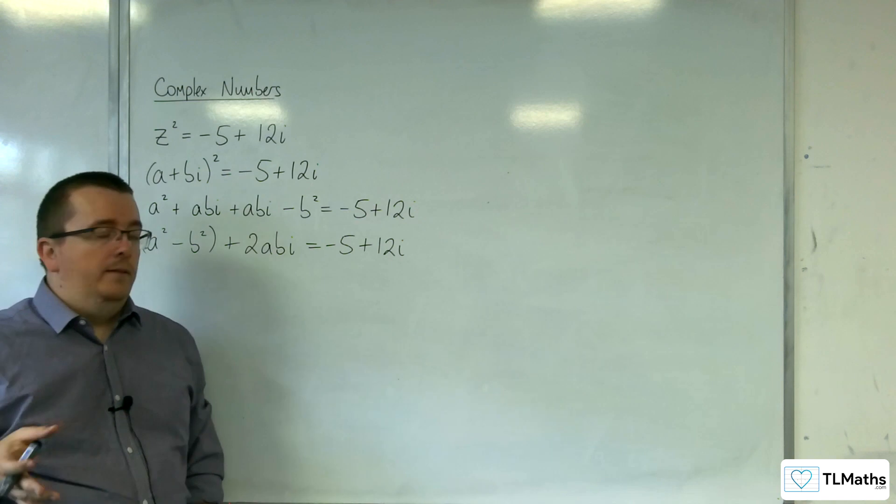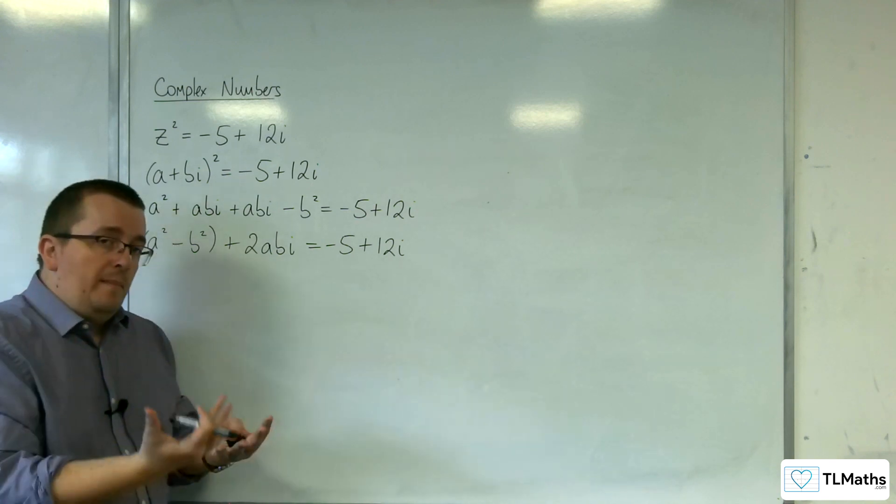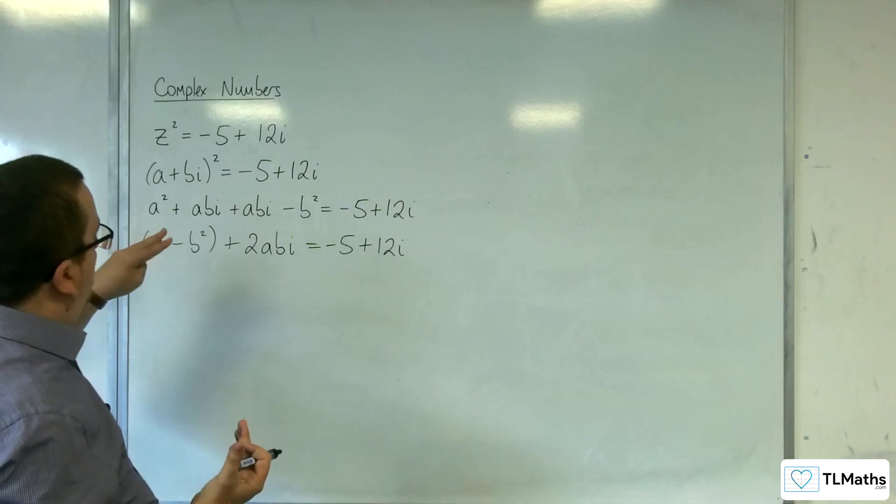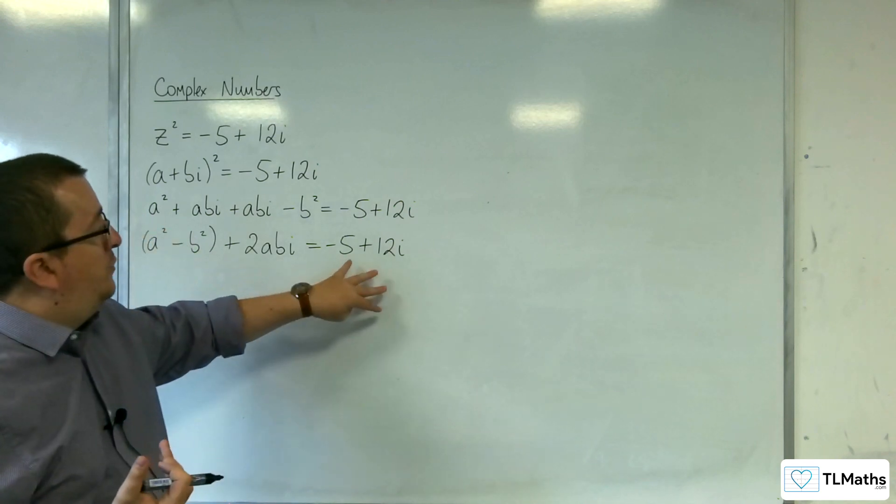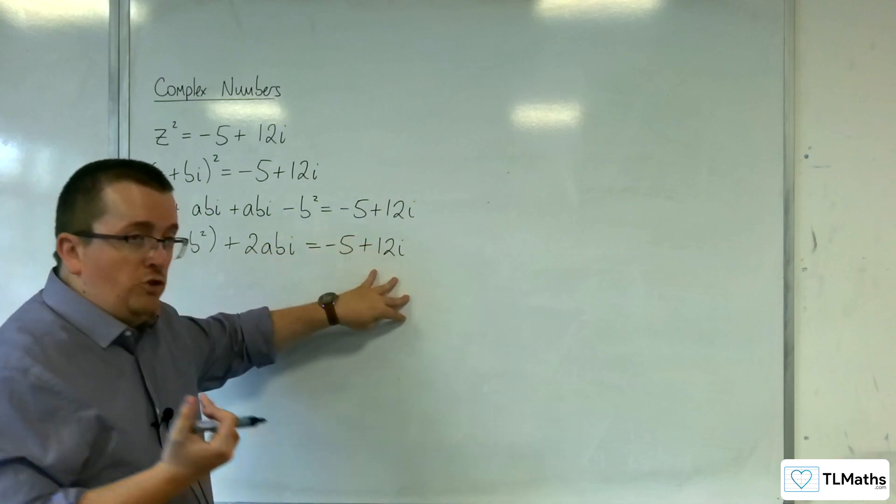So, the idea, then, from here, is to compare coefficients. Compare the real parts, compare the imaginary parts. Because the real part on the left-hand side has got to be the same as the real part on the right, and the imaginary part on the left has got to be the same as the imaginary part on the right.